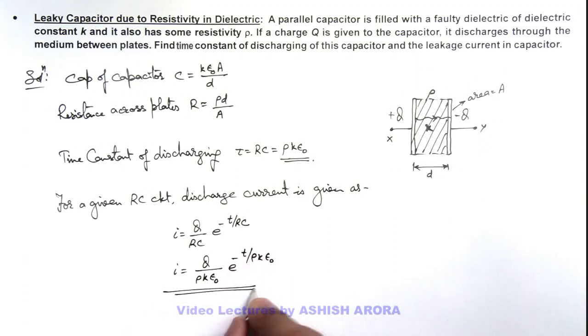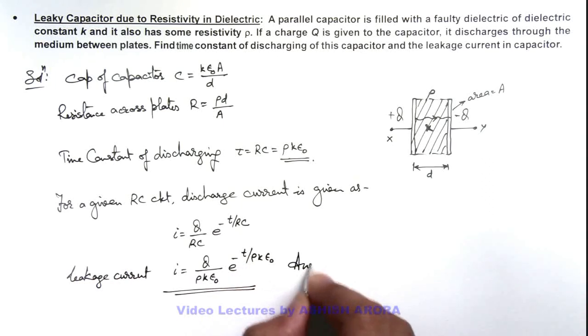So this is the discharge current which can also be written as leakage current through the dielectric and this is the final result of this problem.